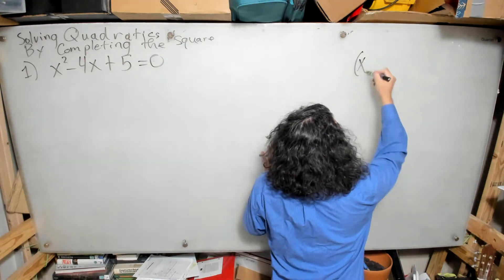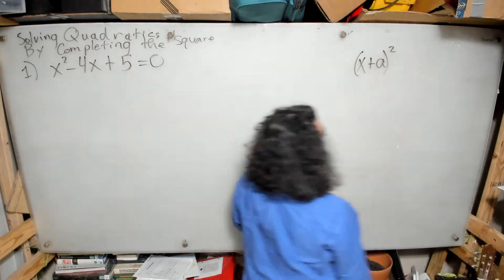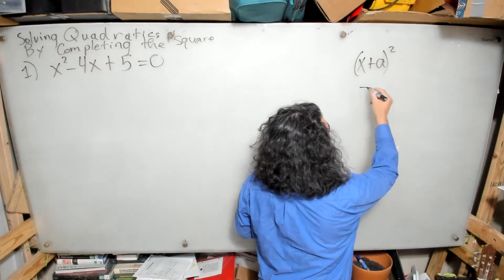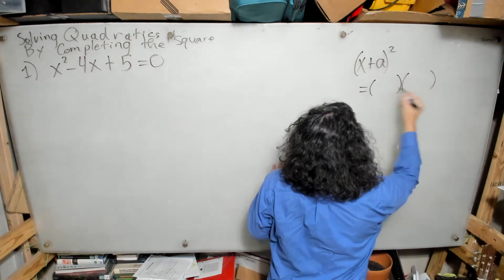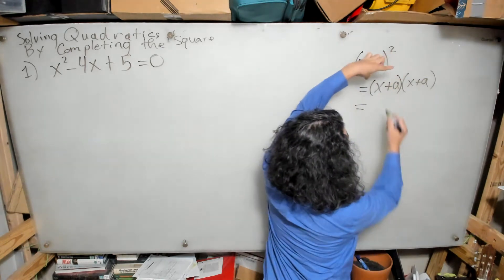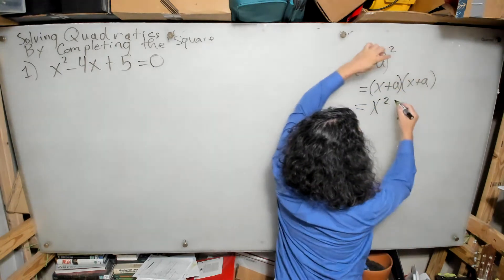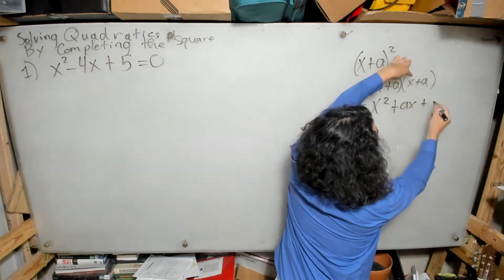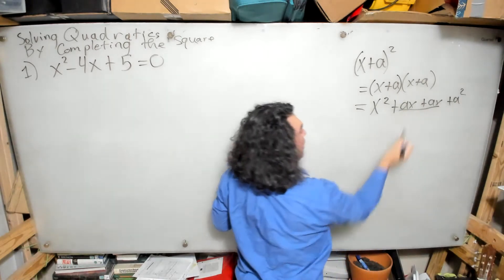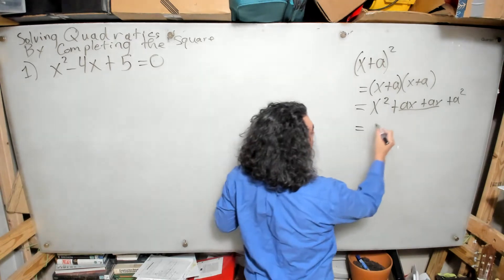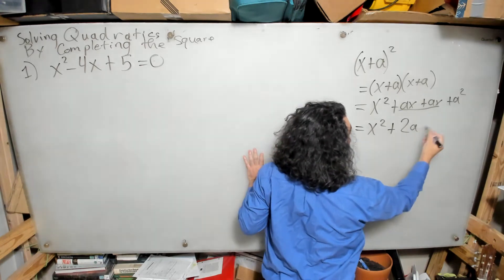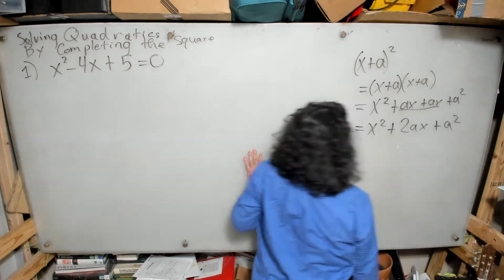I want us to imagine for a moment that I have the term x plus a, and I squared it for some a. If I were to calculate this out, x plus a squared means x plus a times x plus a. This gives me x squared, plus ax, plus ax, plus a squared. These two middle terms are like terms, so I have x squared plus 2ax plus a squared.